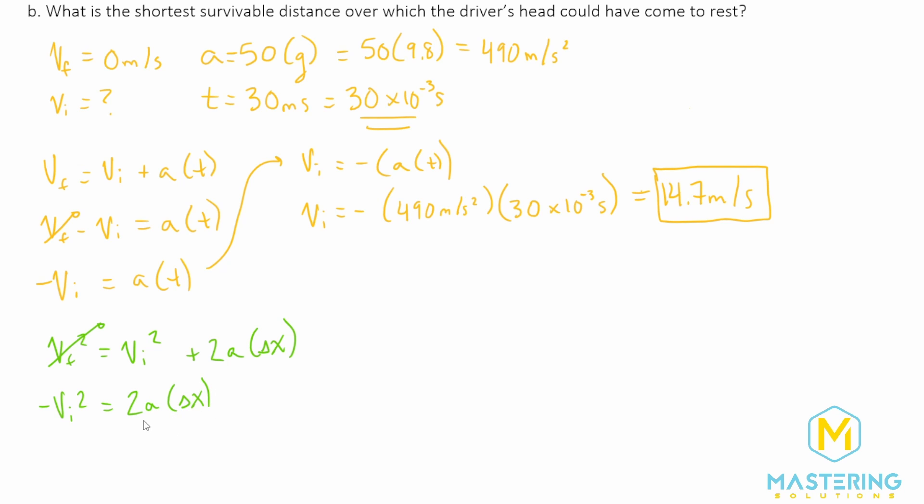we'll move this over. So we have negative v initial squared equals 2a delta x. Now to isolate delta x, we'll divide both sides of the equation by 2a.